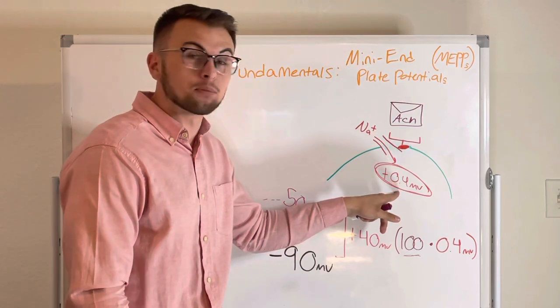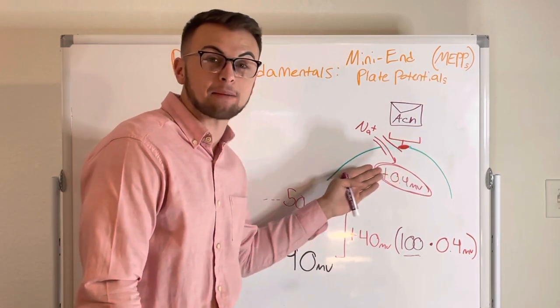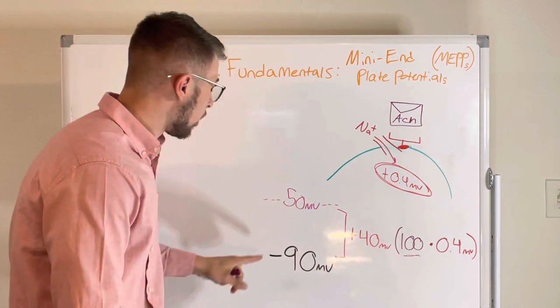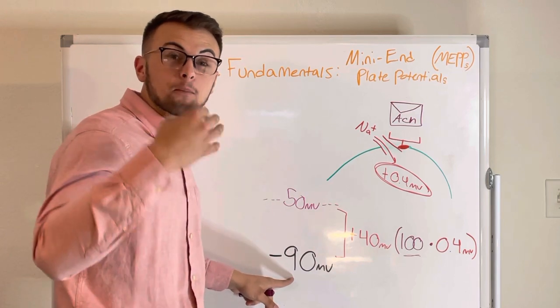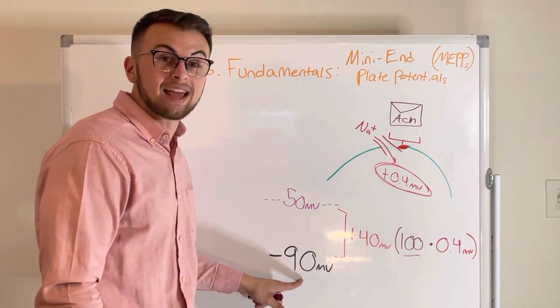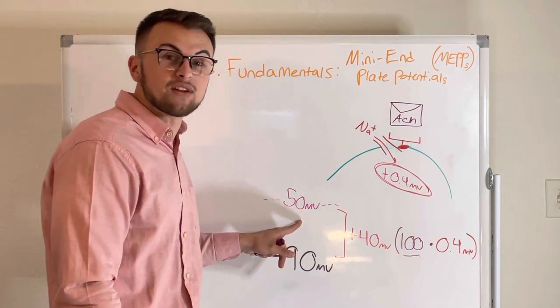This is significant because if our post-synaptic cell has a resting membrane potential of negative 90 millivolts and has a threshold potential of negative 50 millivolts,